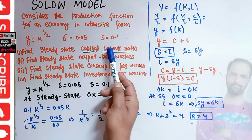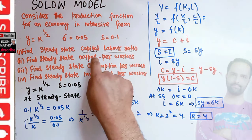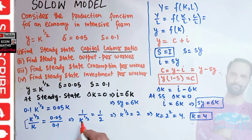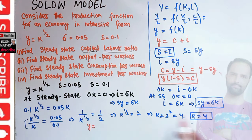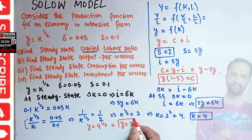Next we need to find the output per worker. Output per worker y equals k to the power one upon two. Since k equals 4, our output per worker is equal to 4 to the power one upon two, which equals 2. So our steady state output per worker is 2.